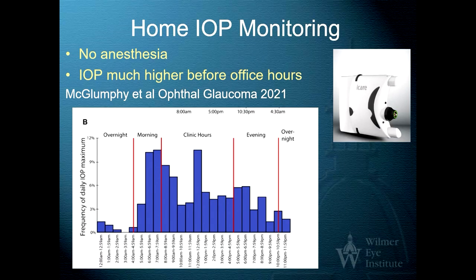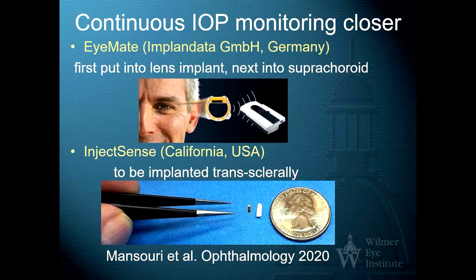We are coming closer to being able to do this using the iCareHome, a device now approved in the United States. You can see variations even in the course of one day, with substantially higher numbers in the early morning hours compared to the evening or middle of the night. We're also coming closer to continuous intraocular pressure monitoring with two companies working on implantable devices that will telemeter eye pressure on a regular basis. This will finally help us understand which eye pressure parameter is most important in glaucoma.